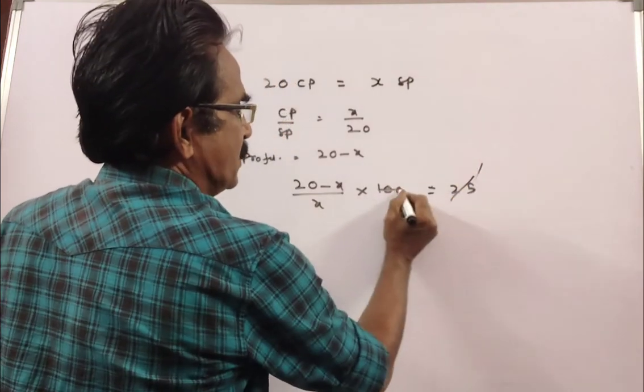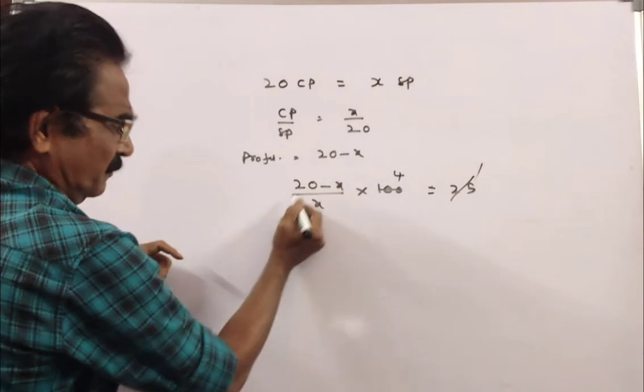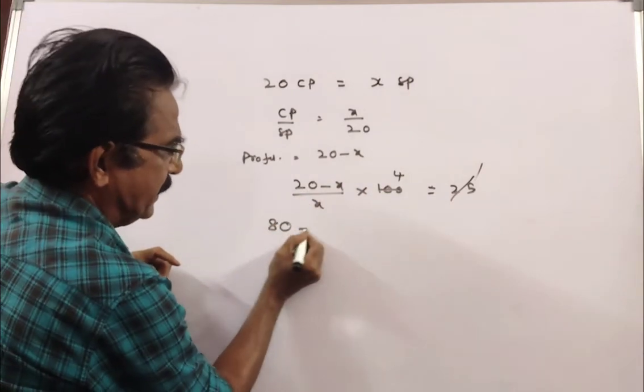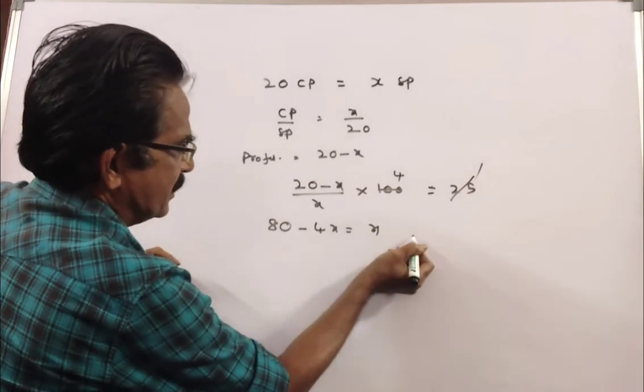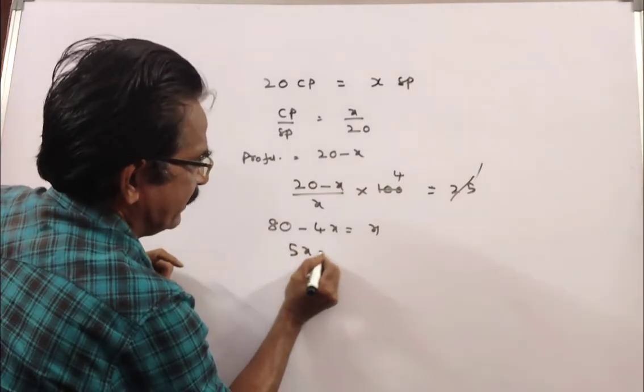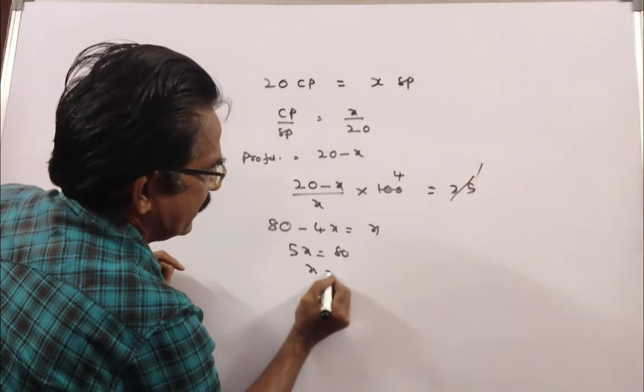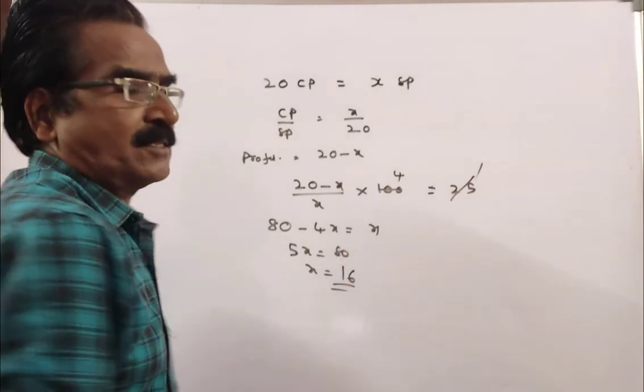Setting up the equation: 80 minus 4X equals X. This implies 5X equals 80. Therefore, X equals 16 is your answer.